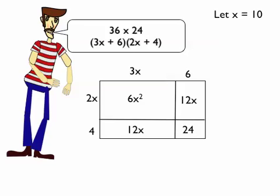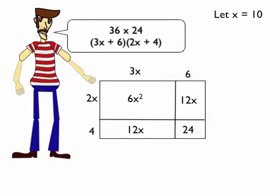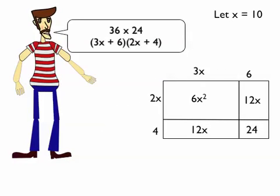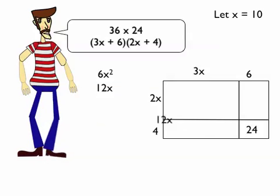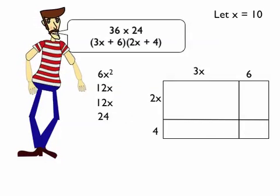Then I want to add up all my like terms, add what I can add. So let's just go ahead and let's get these out of the box. Got my 6x squared and my 12x and my other 12x and the 24. I need to add these up.